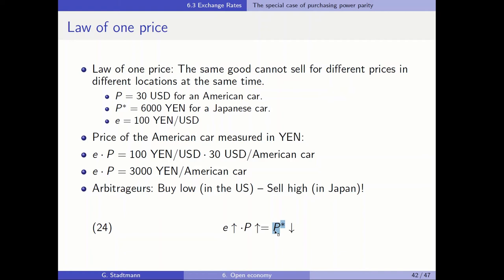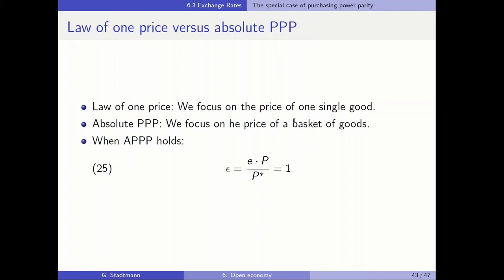Until in the end, the law of one price holds — the same good is sold for the same price in different locations at the same time. When it comes to the law of one price, we focus on the price of a single good. When we talk about absolute purchasing power parity, we focus on the price of a basket of goods. When absolute purchasing power parity holds, the price of a basket of goods in the domestic economy equals the price in the foreign economy, so the numerator and denominator have the same value and the real exchange rate equals one.